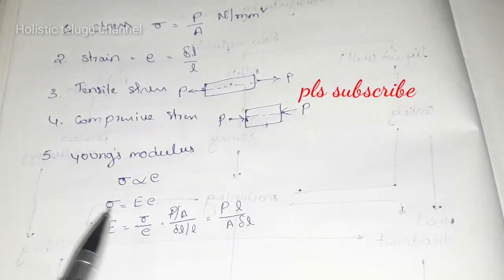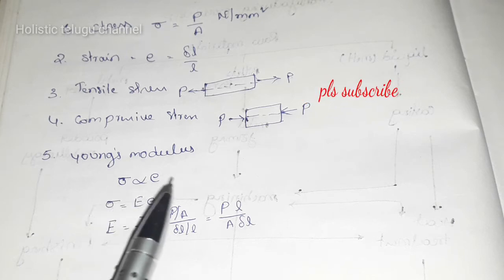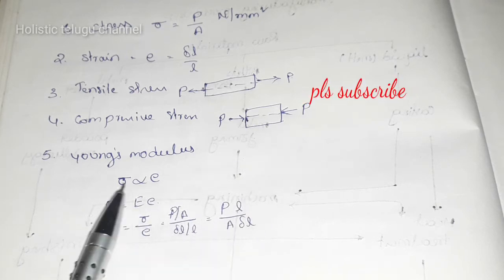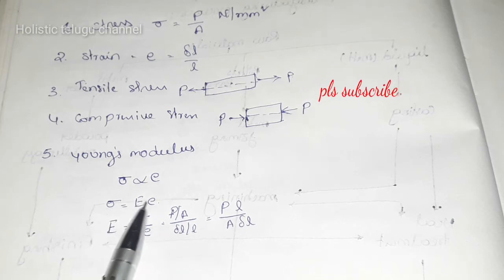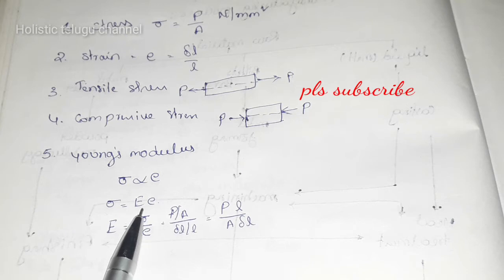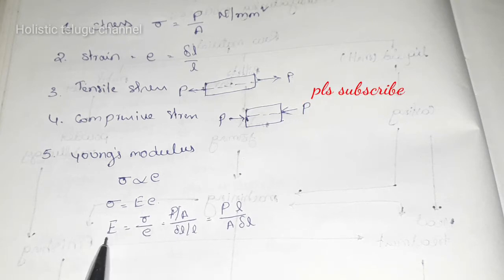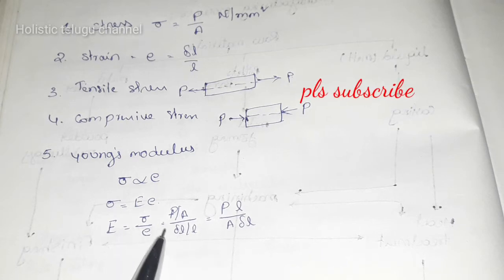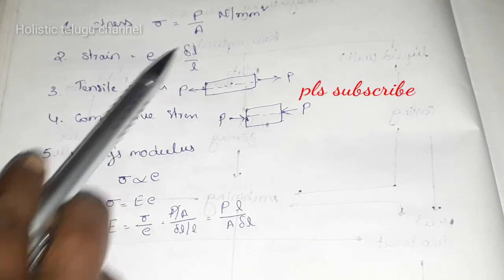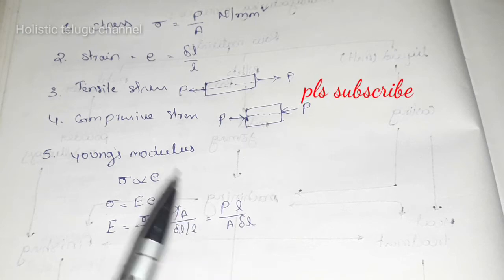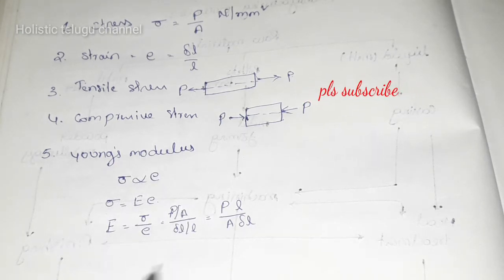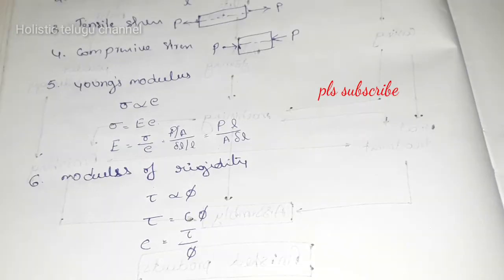Next is Young's Modulus. Within the elastic limit, stress is directly proportional to strain. Sigma is equal to a constant E times e. E is Young's Modulus, so E equals sigma by e. E equals stress by strain. E equals PL by A delta L.